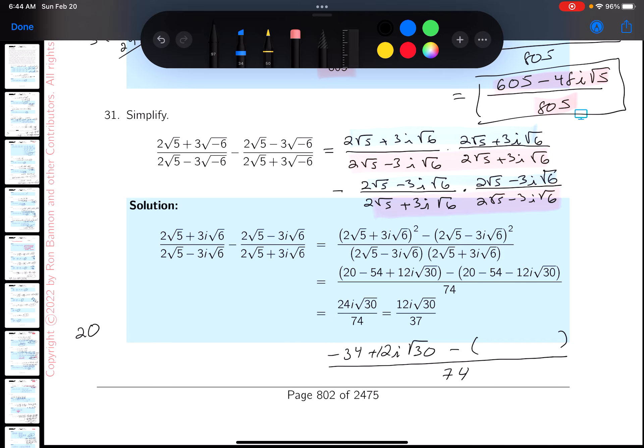So you get 20 minus 6i root 30, minus 6i root 30. And then you're going to get plus 9i squared times 6. Well, what do you get there? You're going to get minus 54 and 20 minus 34. And then you get minus 12i root 30.